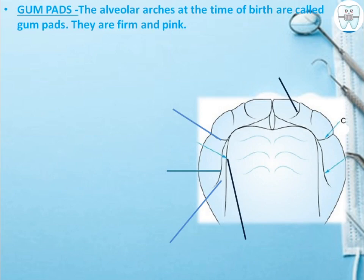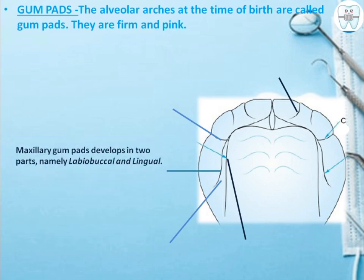First of all, what are gum pads? The alveolar arches at the time of birth are called gum pads. They are firm and pink. This is a diagrammatic representation of the maxillary gum pad — let's see what the parts of it are.